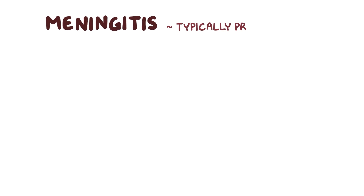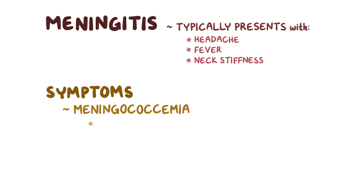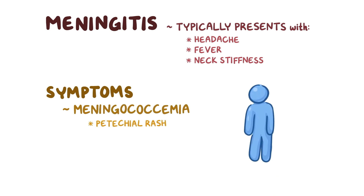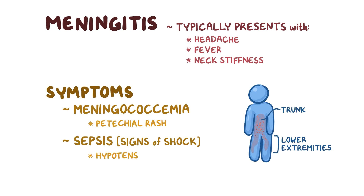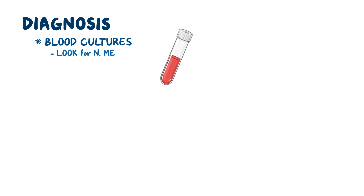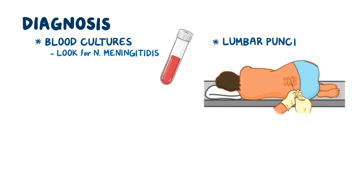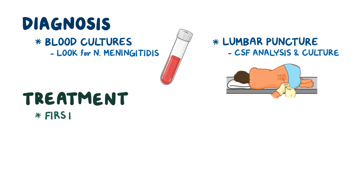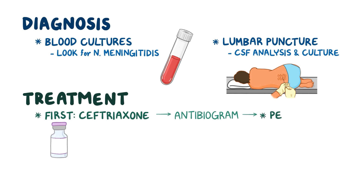People with meningitis typically present with headache, fever, and neck stiffness. Symptoms of meningococcemia include a petechial rash, which are small red or purple spots that often appear on the trunk and lower extremities. And with sepsis, there may be signs of shock, like hypotension and tachycardia. Diagnosis requires blood cultures to look for N. meningitidis in the blood, as well as a lumbar puncture for CSF analysis and culture. Treatment relies on prompt administration of ceftriaxone. Following the results of an antibiogram, treatment can be switched to penicillin G.